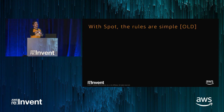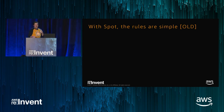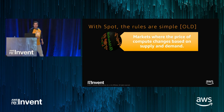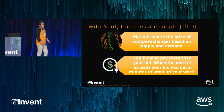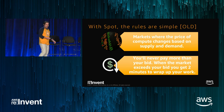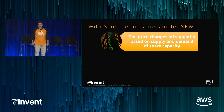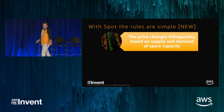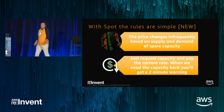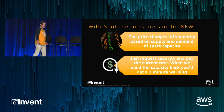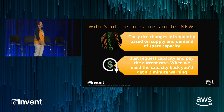We've made some changes. The old rules used to be that markets change based on supply and demand, you'll never pay more than your bid, and when the market price exceeds your bid, you get two minutes to wrap up your work. With the new rules, the price changes infrequently — still based on supply and demand. Now you can just request capacity without a bid, though you still can if you want. And when we need the capacity back, we'll still give you that two-minute warning.